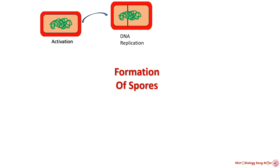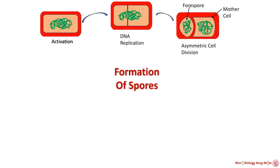The next step is asymmetric cell division — the bacterial cell undergoes asymmetric cell division, resulting in the formation of two unequal compartments within the cell. The smaller compartment is known as the forespore, and the larger compartment is called the mother cell.